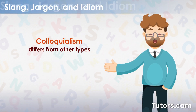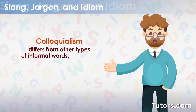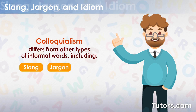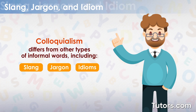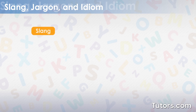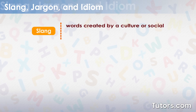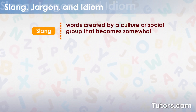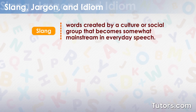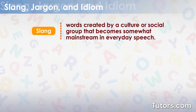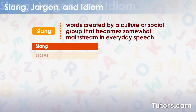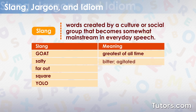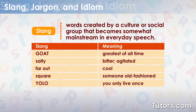Colloquialism differs from other types of informal words, including slang, jargon, and idioms. Slang are words created by a culture or social group that become somewhat mainstream in everyday speech. Slang words can appear and disappear from language, so they can indicate the time period.